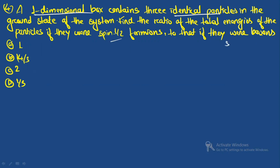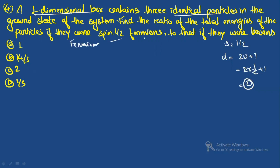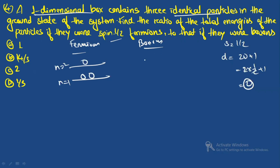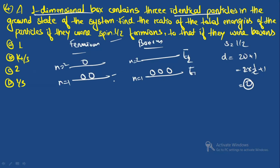For spin-½ fermions, the degeneracy is 2s+1 = 2, meaning one state can hold two particles. So in the ground state: two particles occupy n=1 and one particle occupies n=2. For bosons, all three particles can be in the same state, so all three occupy n=1.